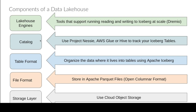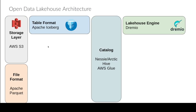With that setup in place, any engine trying to run analytical queries on your data can do so easily. Tools like Dremio, Spark, Presto, Trino — you name your favorite tool. They connect to the catalog, ask where the table is, get pointed to the metadata in the table format, determine which files to scan, and find those files in your storage. That's essentially how a data lakehouse works. When designing one, you've got to choose your storage, file format, table format, catalog, and query engine.